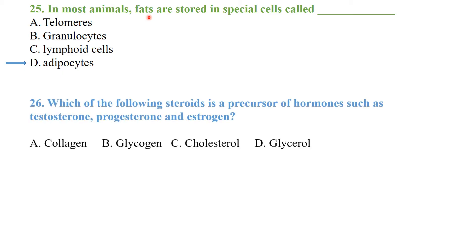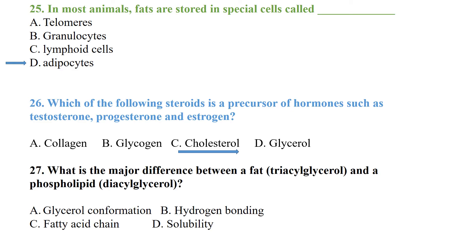Q25: Which steroid is a precursor of hormones such as testosterone, progesterone, and estrogen? The answer is cholesterol. Q26: What is the major difference between a fat (diacylglycerol) and a phospholipid? The major difference is the fatty acid chain composition and the polar head group.